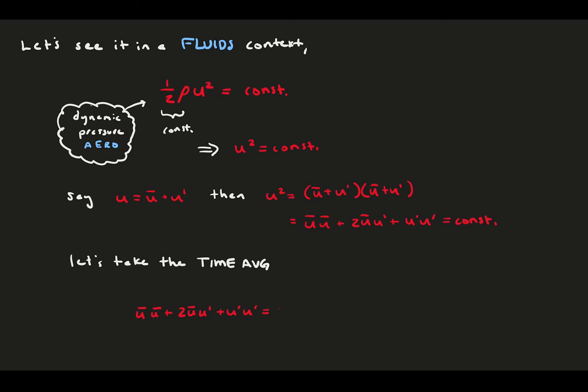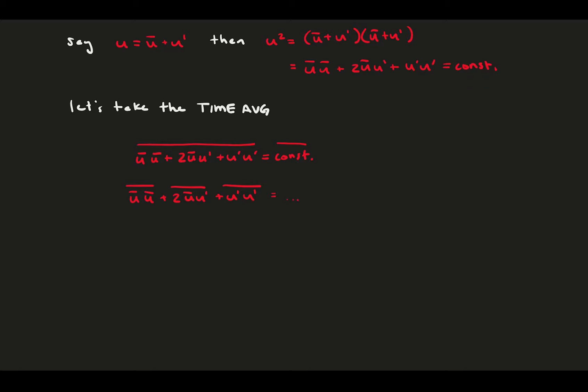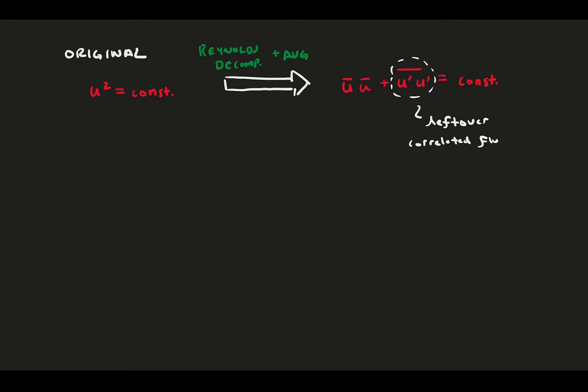Let's apply Reynolds decomposition, and then square and distribute the terms accordingly. Now, take the average of this equation on both sides. By now we're experts on the rule of averaging, and we notice that the middle term becomes zero, while the first and last term stick around. If we compare back to the original, we had u squared equals a constant, a nonlinear equation, and then Reynolds decomposition and averaging got us a new equation with two terms instead of one. One term has the averages squared, and the other is the average of the fluctuations squared. This leftover term represents the correlation of the functions.